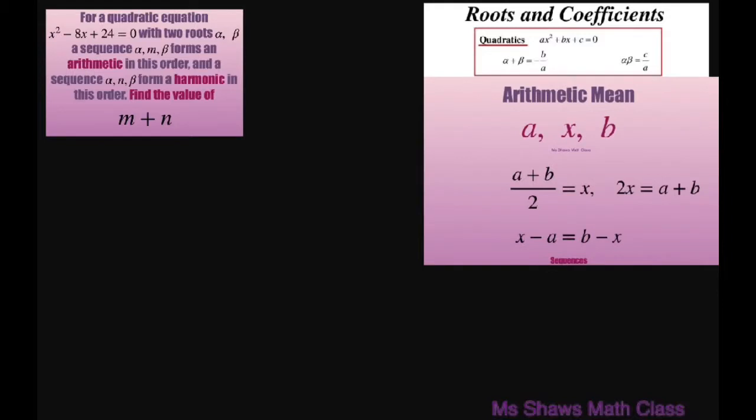What we're going to do is relate the roots and the coefficients, remembering your Algebra 2. So if we relate our roots and coefficients, we have alpha plus beta equals 8. These are the two roots alpha and beta, and we also know that alpha times beta equals 24.